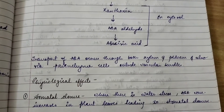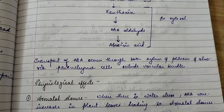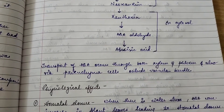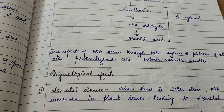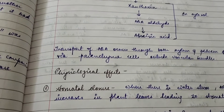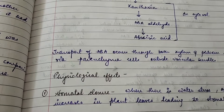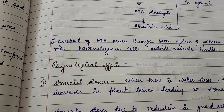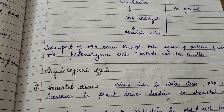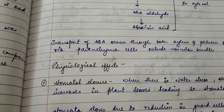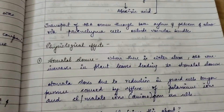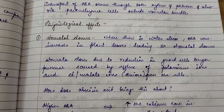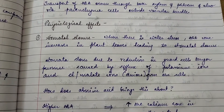Now, transport. The transport of abscisic acid occurs through both xylem and phloem, and also via parenchyma cells outside the vascular bundles. Unlike some other hormones transported only through xylem or only through phloem, abscisic acid uses xylem, phloem, and also parenchyma cells outside the vascular bundles as a third route. Now let's come to the main point — the physiological effects — and first we'll be talking about stomatal closure.